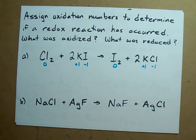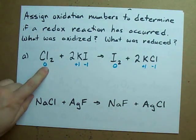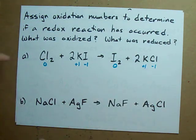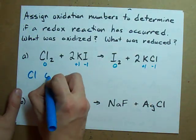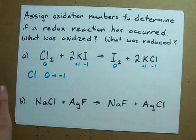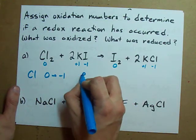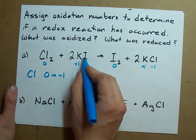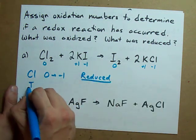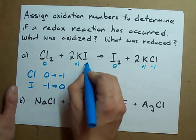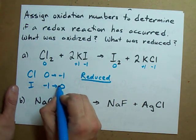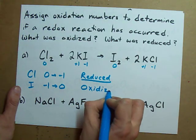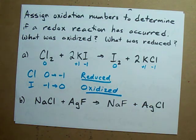Did any oxidation numbers change here? Chlorine went from zero to minus one — that's a decrease, so chlorine was reduced. What else changed? Iodine went from minus one to zero — that's an increase, so iodine was oxidized. There was a redox reaction. Pretty easy.